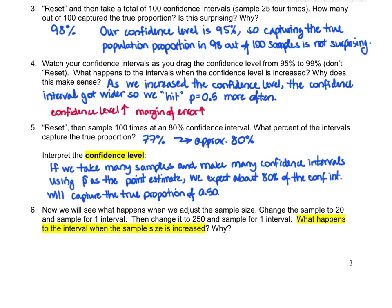If we take many samples and make many confidence intervals using p-hat as the point estimate, we expect about 80% of the confidence intervals will capture the true proportion, which is represented by that green line at 0.50.